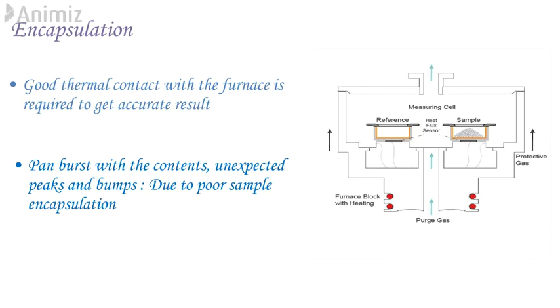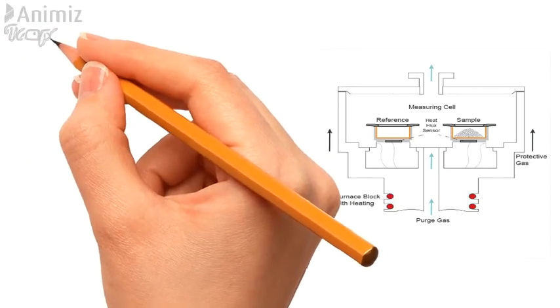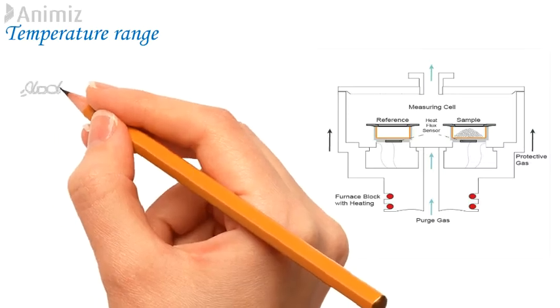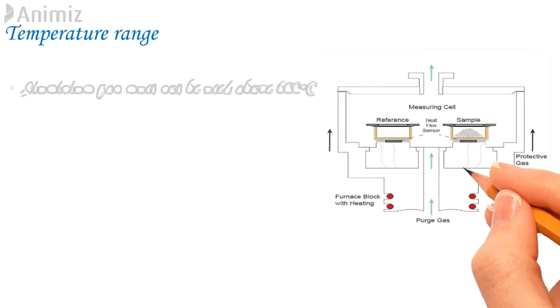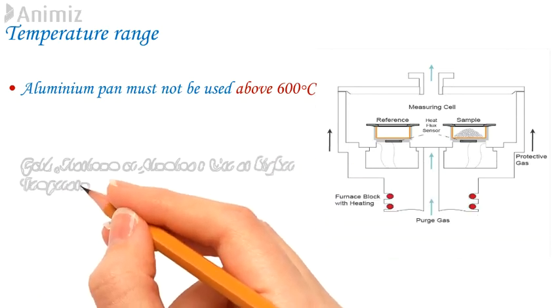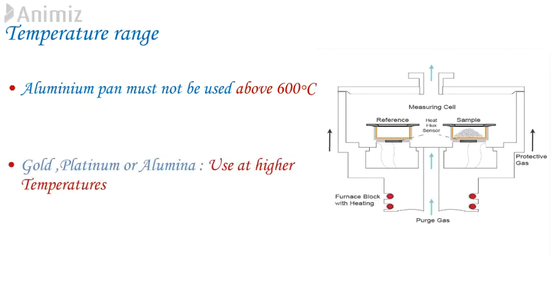Most manufacturers provide a range of sample pans for different purposes with a range of different sizes, pan materials and associated temperature and pressure ranges. 2. Temperature range. Make sure that pan is specified for desired temperature range and will not melt during scan. Remember that aluminum must not be used above 600 degrees Celsius. Pan material such as gold, platinum or alumina can be used at higher temperatures.